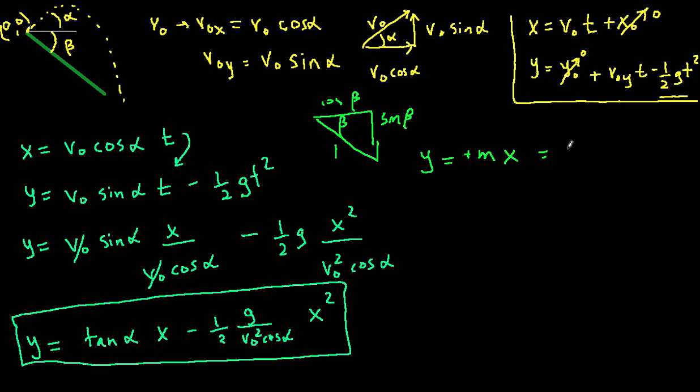so that is rise over run, so that's sine beta over cosine beta times x, so that equals tangent of beta. Okay. So that's the equation of the line. So, it's tangent of beta times x.